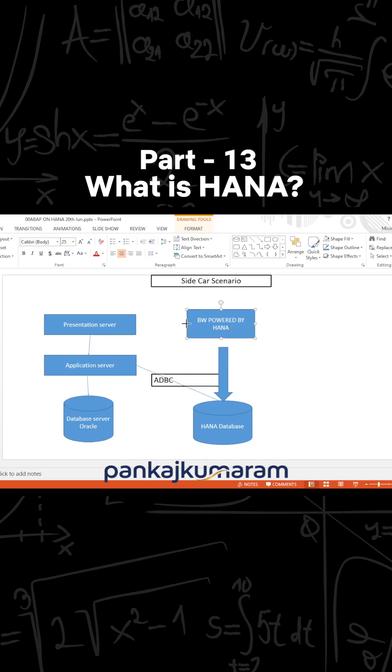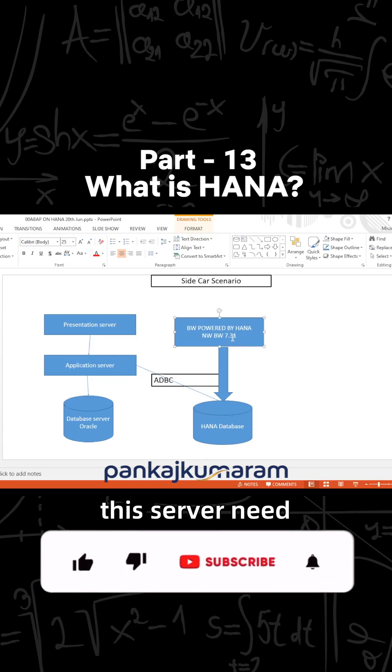The minimum requirement for the BW was NetWeaver BW 7.31 - the NetWeaver Business Warehouse server version 7.31. This server needed to be there in order to install the BW.